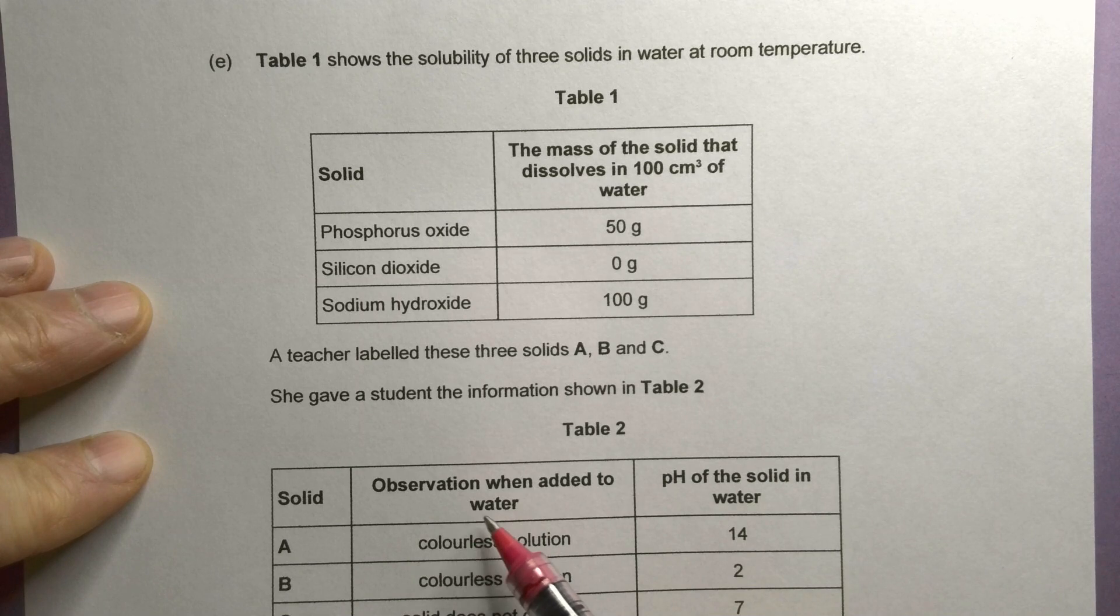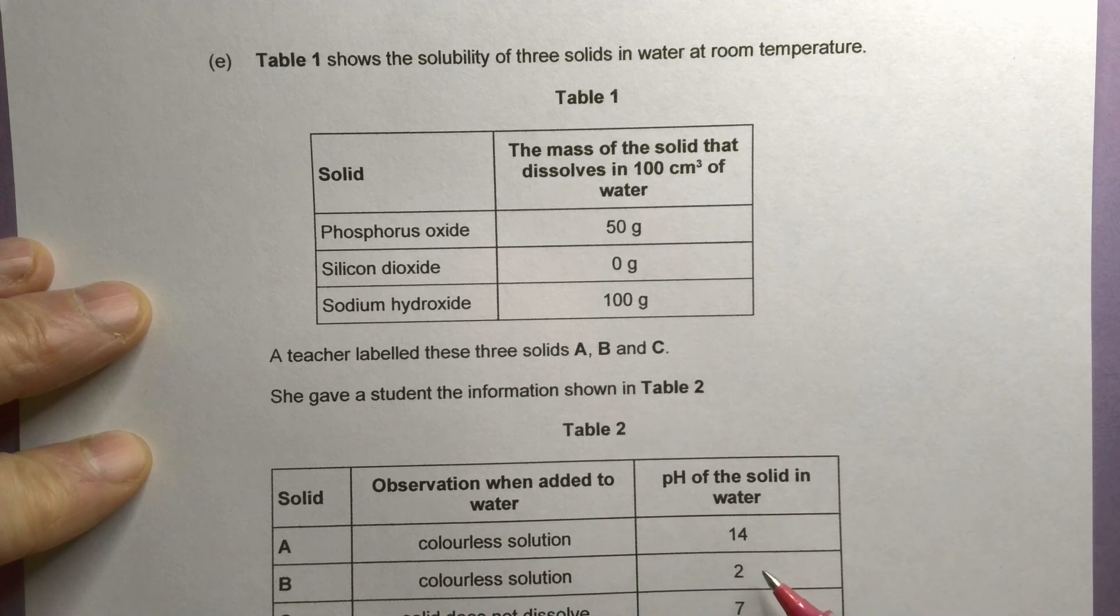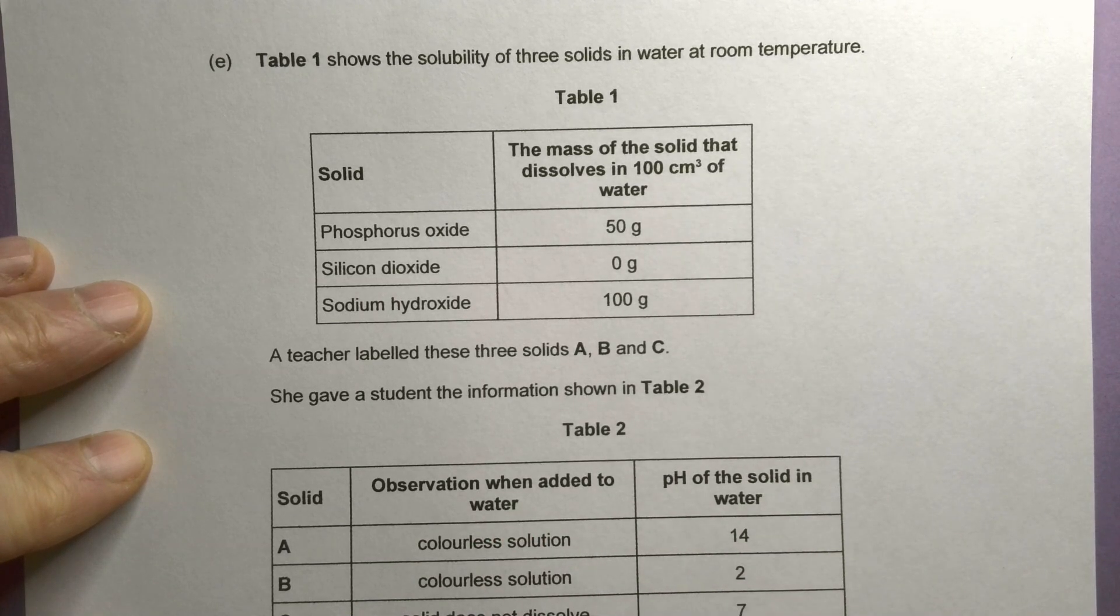She gave the student the information shown in Table 2. Got a table here. What happens when you add them to water and then the pH of the solid in water. Describe a method that could be used to identify each of the three solids A, B and C.